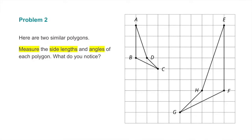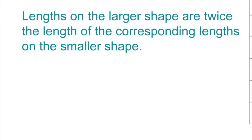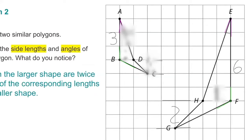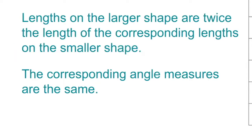Number 2. Here are two similar polygons. Measure the side lengths and angles of each polygon. What do you notice? The side length from A to B is 3 units on the smaller figure, and the corresponding side from E to F is 6 units. From B to D is 1 unit on the smaller figure, and from H to F is 2 units. The side lengths of the larger shape are twice the corresponding lengths on the smaller shape. Looking at angles, angle ABC corresponds with angle EFG, and the corresponding angle measures are the same.